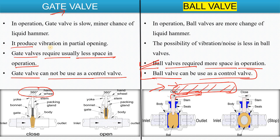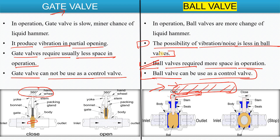Gate valves produce vibration in partial opening — if partially open, vibration and chattering can occur. In the case of the ball valve, the possibility of vibration and noise is less than the gate valve because the disk is a hollow ball, so even if partially open, vibration is comparatively less.